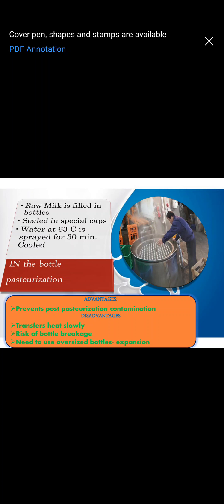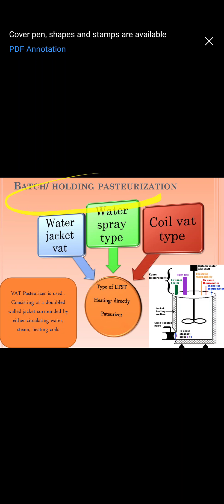The disadvantages of in-bottle pasteurization: because glass bottles are used, heat must be gradually increased — sudden increase may cause breakage. Bottles may also break by rubbing against each other during mass handling. When milk is heated it expands, so oversized glass bottles must be used. Since the bottles are closed during pasteurization, the milk should not flow out or burst out, so only half the bottle is filled with milk and the rest is left as head space for expansion.